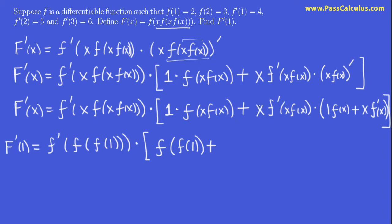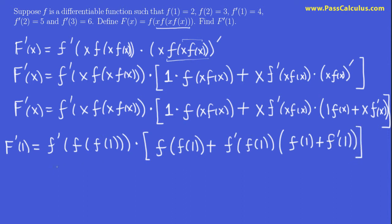Continuing to substitute x = 1: this 1 is not doing anything, so I just have f of 1 here. Plus, this 1 multiplication doesn't do anything, so there's no reason to write it — I just have f prime of 1. Close this bracket and then close that one. So this expression is coming along nicely.